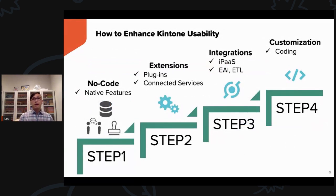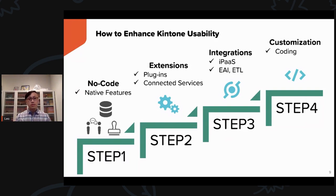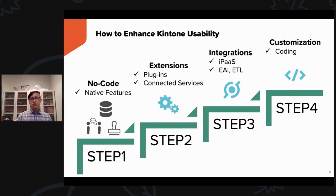Here is a typical roadmap for someone who uses Kintone and how to gradually enhance the system to satisfy their needs. Step 1: create your apps using the native feature. Step 2: add extensions such as plugins or connected services. Step 3: use integrations such as iPaaS, EAI, or ETL. Last: add some customization via coding.